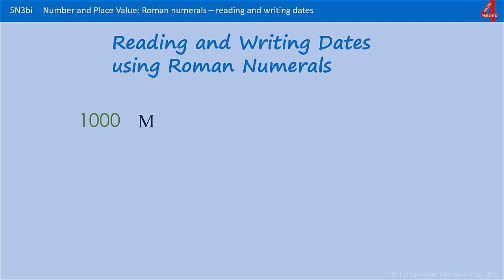M is 1000. There were many reasons for celebration in the year 2000, not least of which it was easier to write dates in Roman numerals. The year 2000 simply became MM. And as that decade went on, it was just adding on the 1 and the 2.